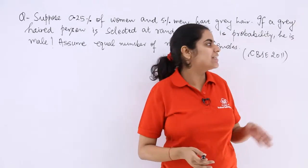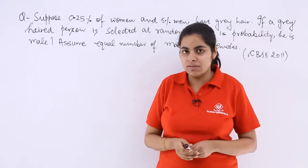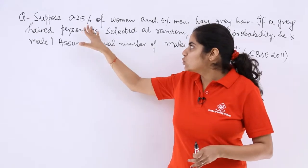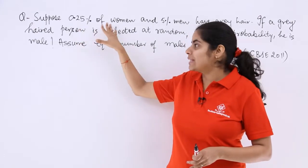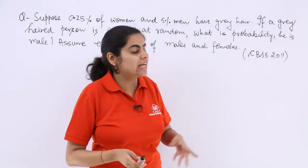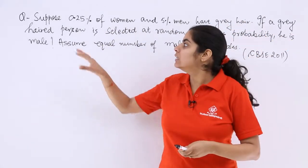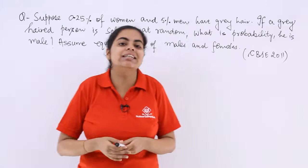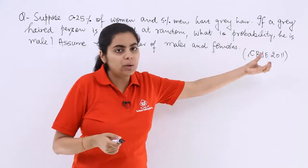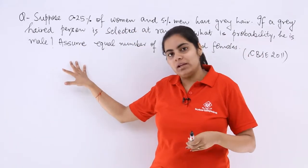This is a question asked in the CBSE examination 2011. It says suppose 0.25% of women and 5% of men have grey hair. If a grey haired person is selected at random, what is the probability he is a male?